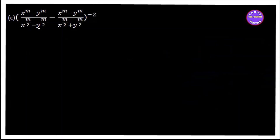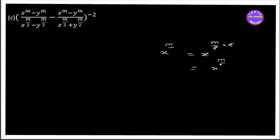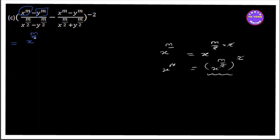Now for the next expression: x to the power m, minus y to the power m, minus 2. Then x to the power m by 2, minus m power, minus 2. We consider x to the power m/2, the whole square root. This is the key form we will work with.